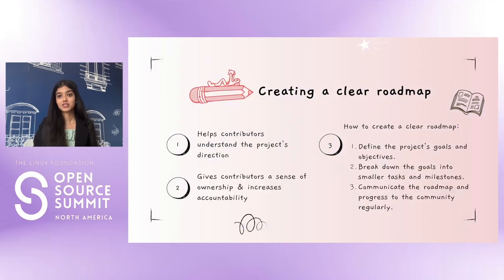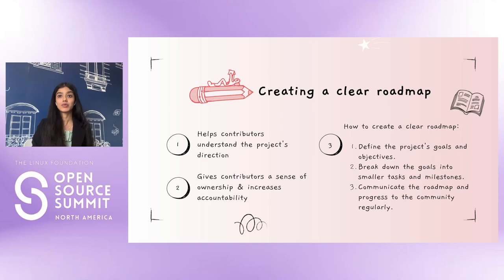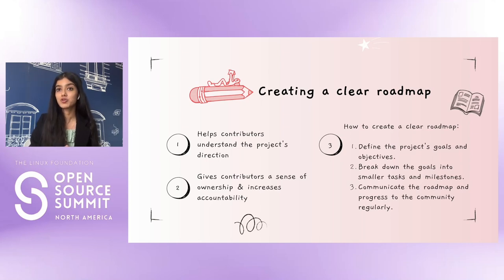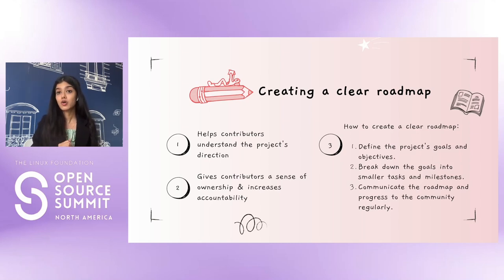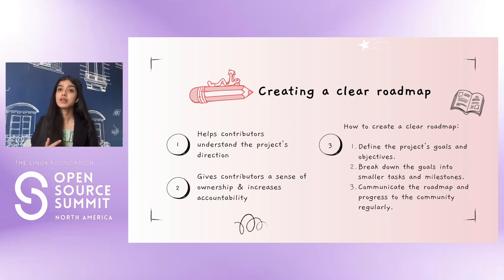A clear roadmap is essential for retaining contributors and keeping them motivated. Contributors can see the bigger picture and understand how their contributions fit into the project's goals, and they feel that they are part of the project's development and that their contributions are valued. By having a clear roadmap and communicating it to them, we can ensure they understand the project's direction, their value in it, and their role.